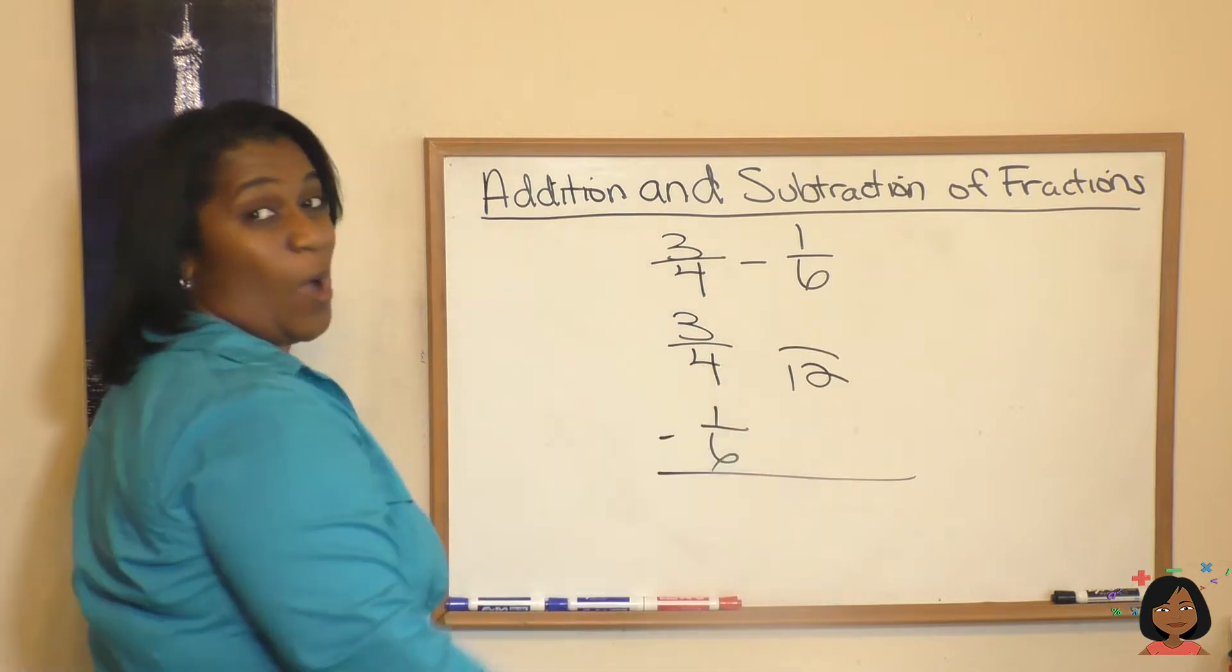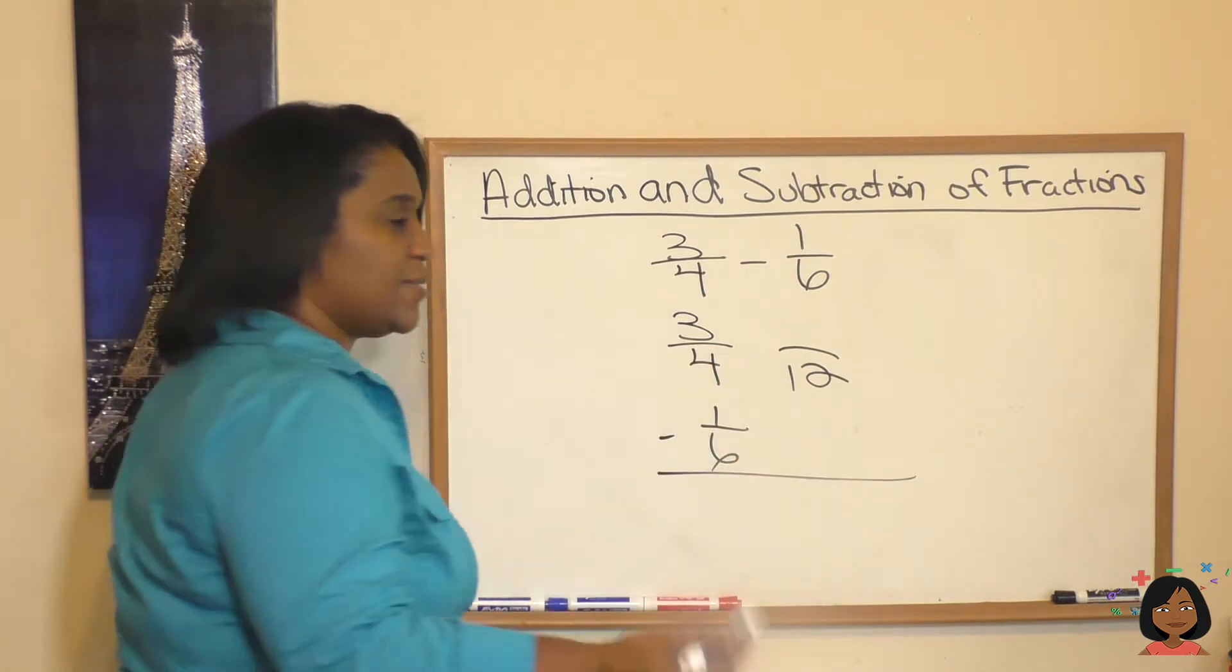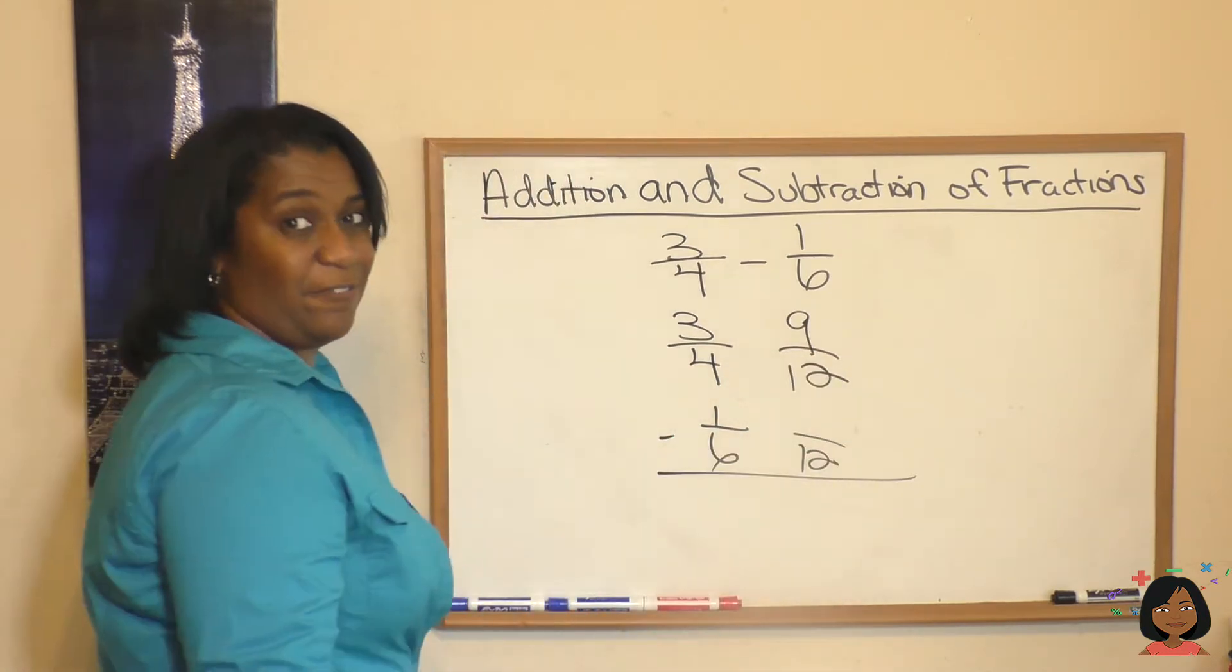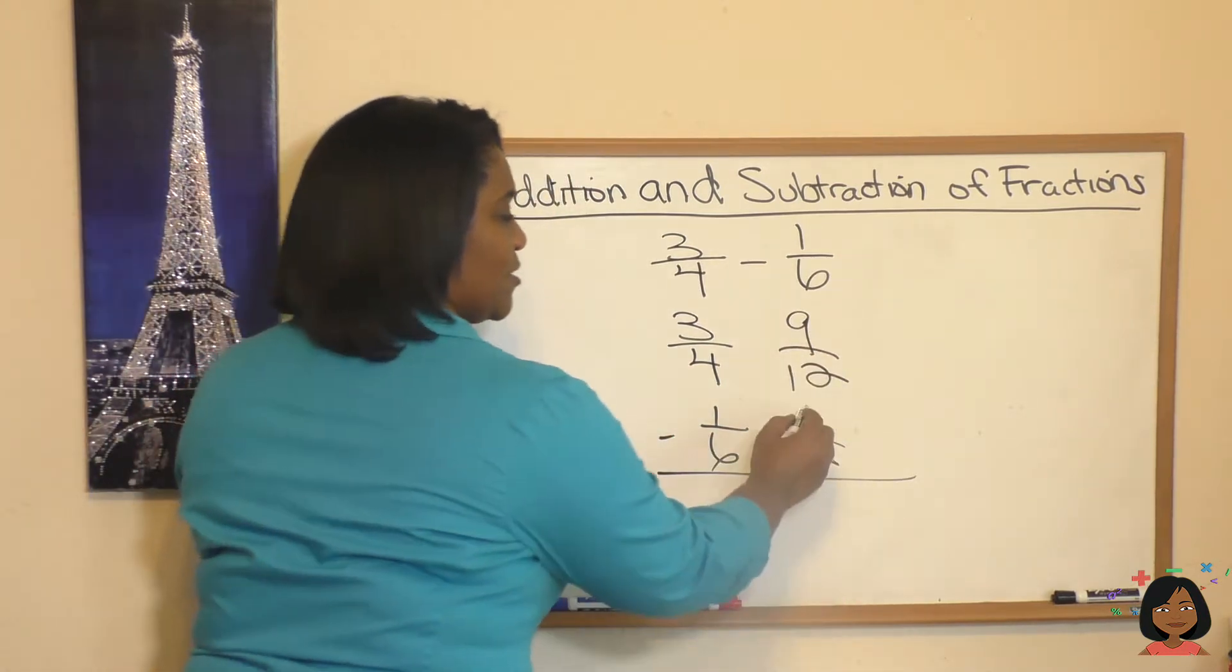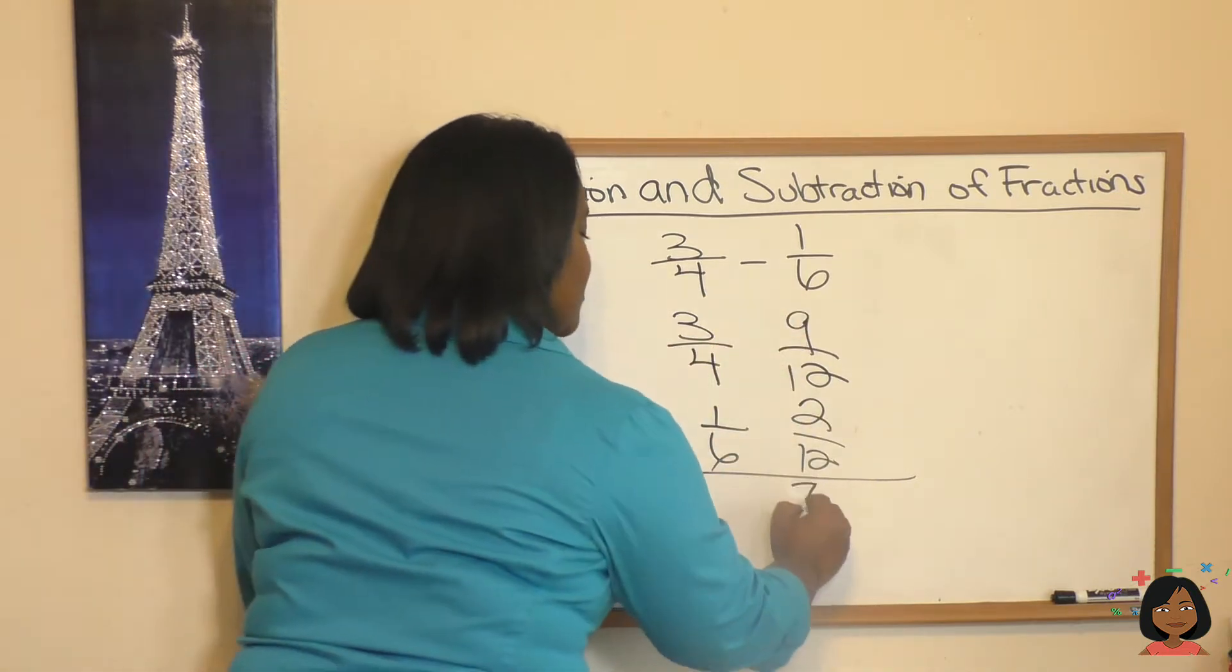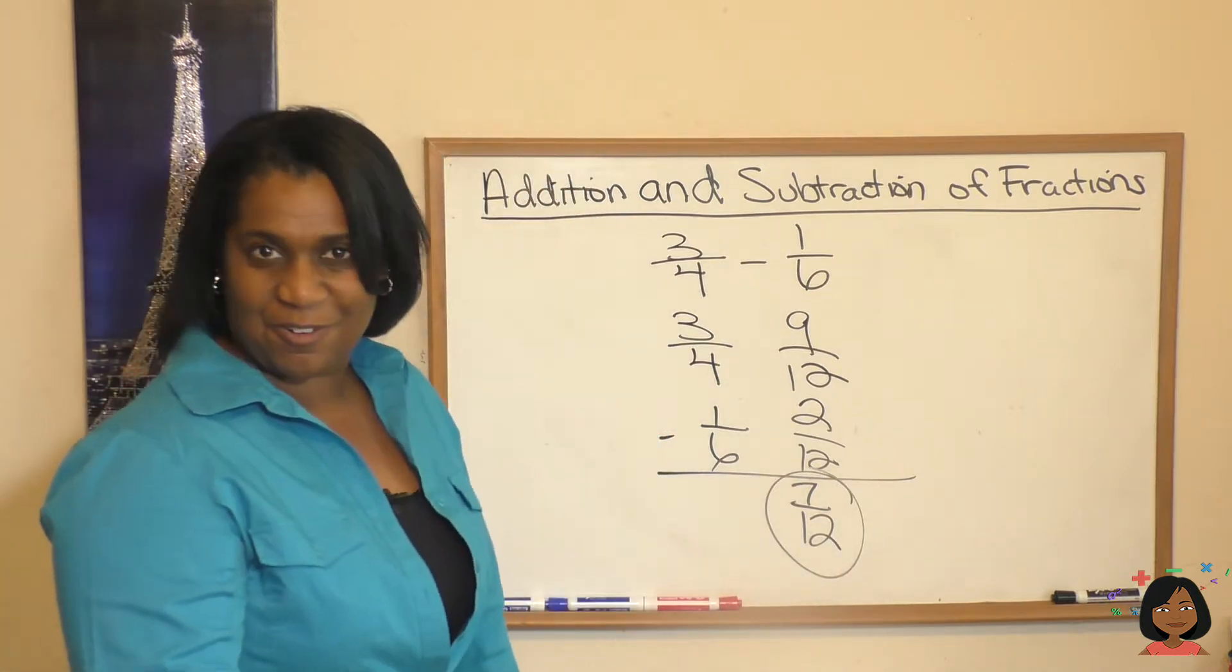Here we go. 4 times what is 12? 4 times 3 is 12. So 3 times 3 is 9. And 6 times 2 is 12. So 1 times 2 is 2. Let's subtract. 9 minus 2 is 7 twelfths. And that cannot be reduced any further. So 7 twelfths is your answer.